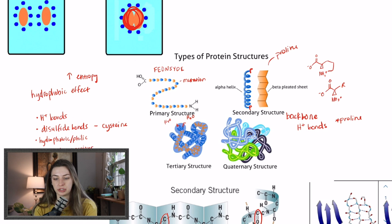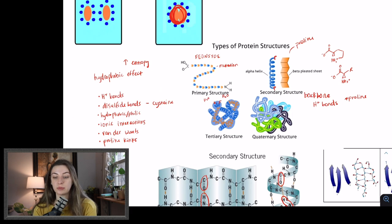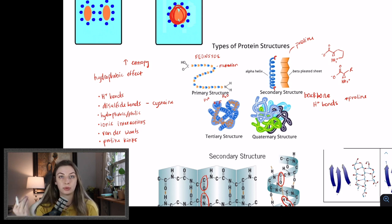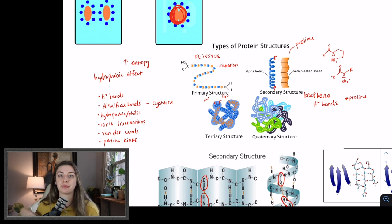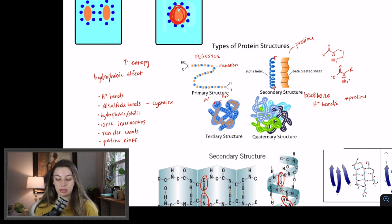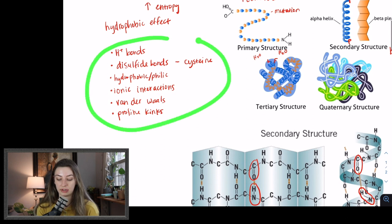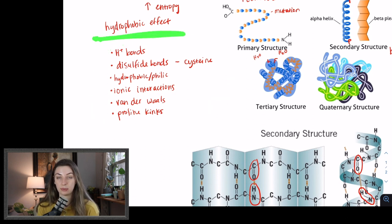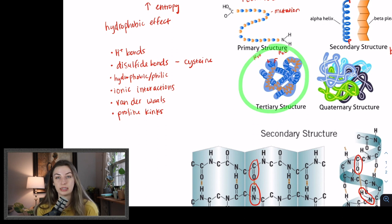The difference between tertiary and secondary structure: secondary structure is between the backbones of amino acids and it is local — not a hundred amino acids away from each other, but relatively close — and it is hydrogen bonding only. Tertiary structure can involve any of those types of interactions we listed, plus the hydrophobic effect, and it creates the 3D structure that makes proteins so unique.